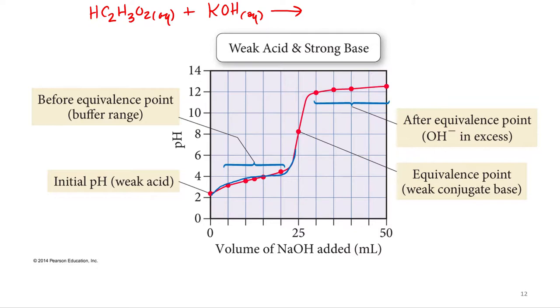All right, so acetic acid plus potassium hydroxide. What are going to be my products? Potassium acetate. So KC2H3O2. Good. And water. Good. You're always going to make water.